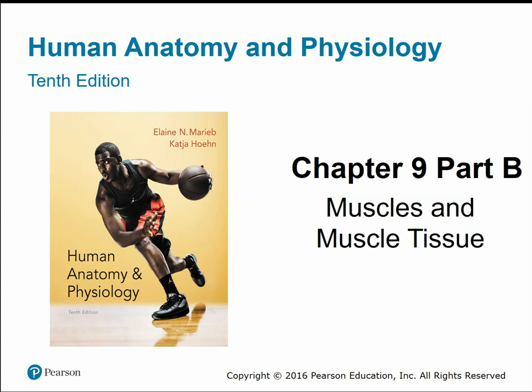This is chapter 9, part B, on muscles and muscle tissue. In the first half of this chapter, we focused primarily on the structure and arrangement of skeletal muscle, skeletal muscle fibers, and sarcomeres down to the molecular level. This second half focuses on the physiology of skeletal muscle contraction — how sarcomeres and myofilaments interact to produce that contraction and shortening of the muscle tissue.